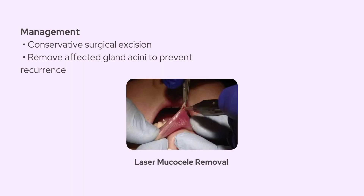Management-wise, mucoceles usually respond really well to conservative surgical removal. The key is to excise not only the lesion itself, but also, if possible, the adjacent minor salivary gland to prevent recurrence. And if the problem arises from an obstructed duct, removal of the affected gland's acini is recommended to make sure it doesn't come back.